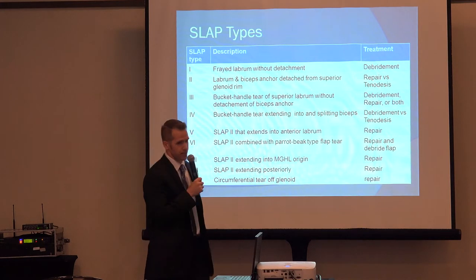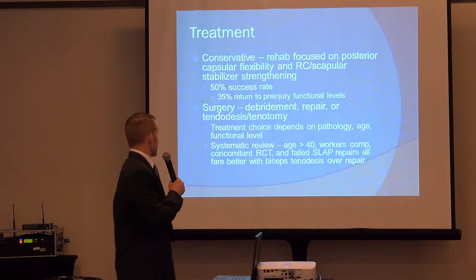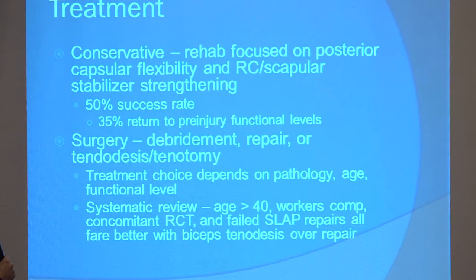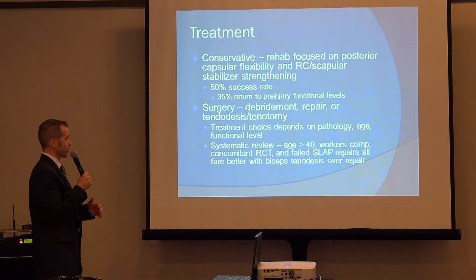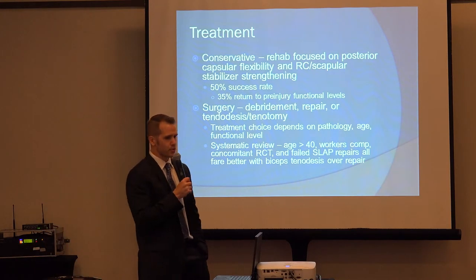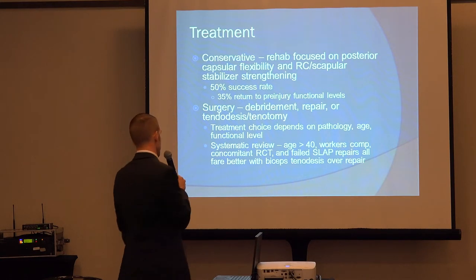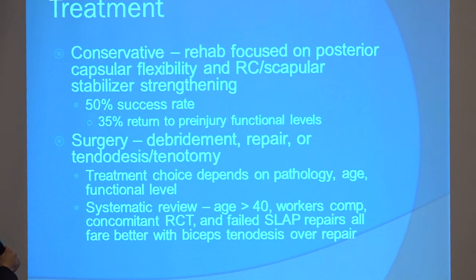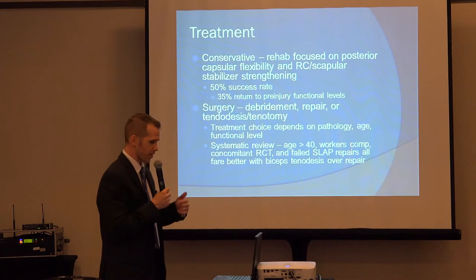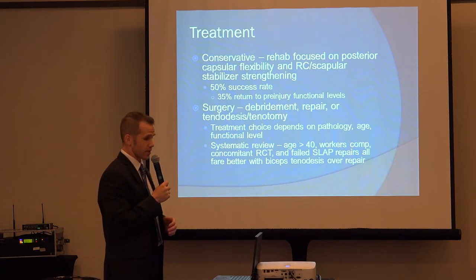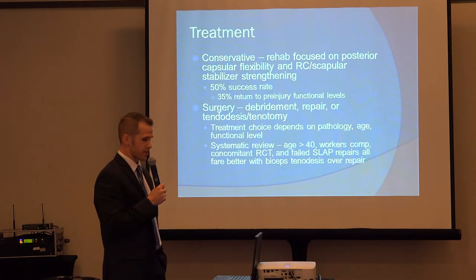Treatment depends on the classification, plus other factors. With conservative treatment, rehab is focused on posterior capsule flexibility — because often with SLAP tears we see posterior capsular tightness — as well as rotator cuff and scapular stabilizer strengthening. Unlike posterior labral tears, there's only a 50% success rate conservatively, and only 35% are actually able to return to their pre-injury levels. For surgery, you can debride the labral tear, repair it, or do a tenodesis or tenotomy. That treatment choice depends on pathology, age, and functional level. For work comp patients in general, they're going to have a tenodesis as studies have shown they do significantly better, however if they're less than age 30, I would absolutely consider doing a repair.